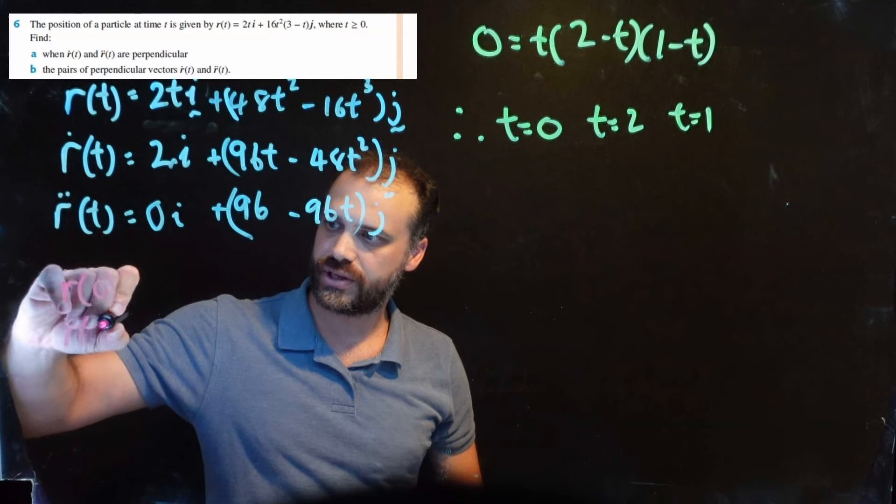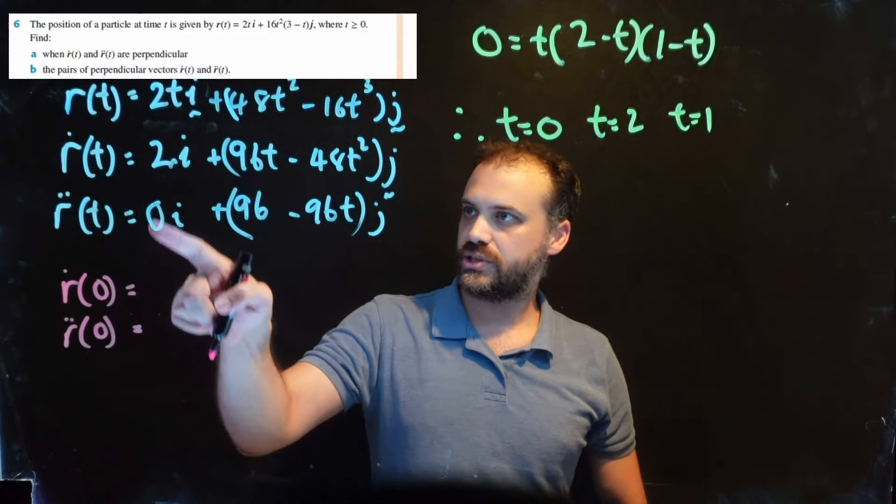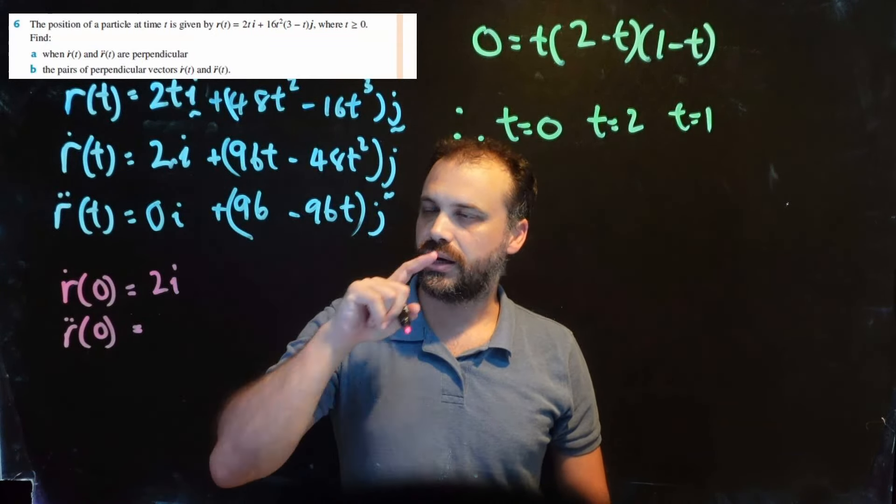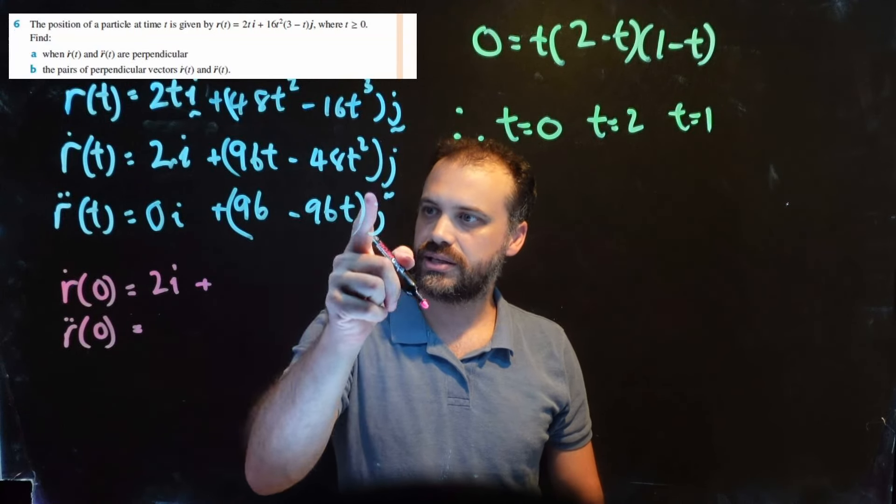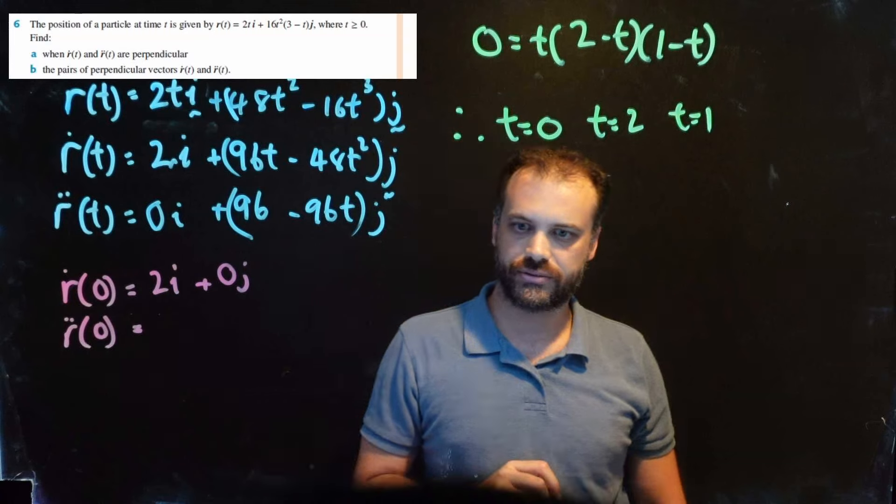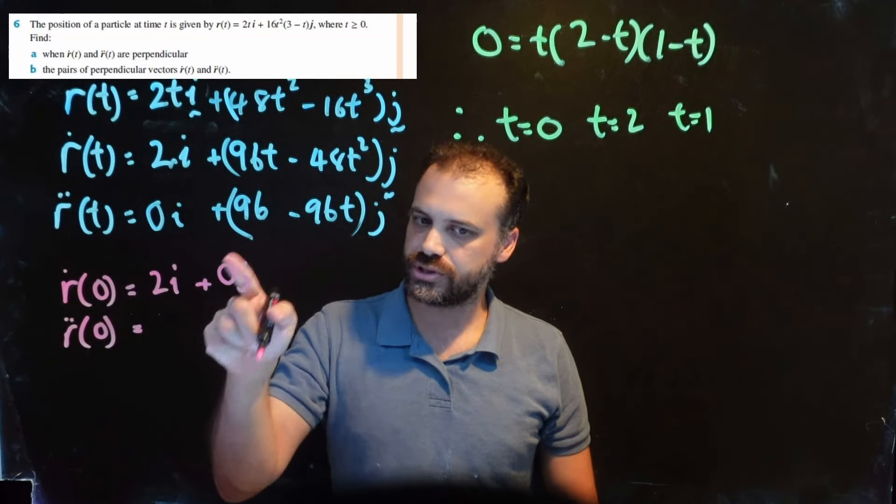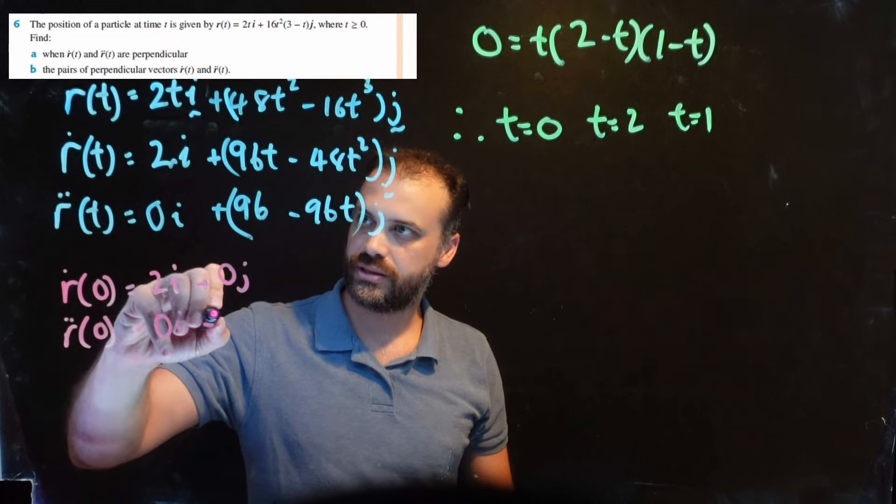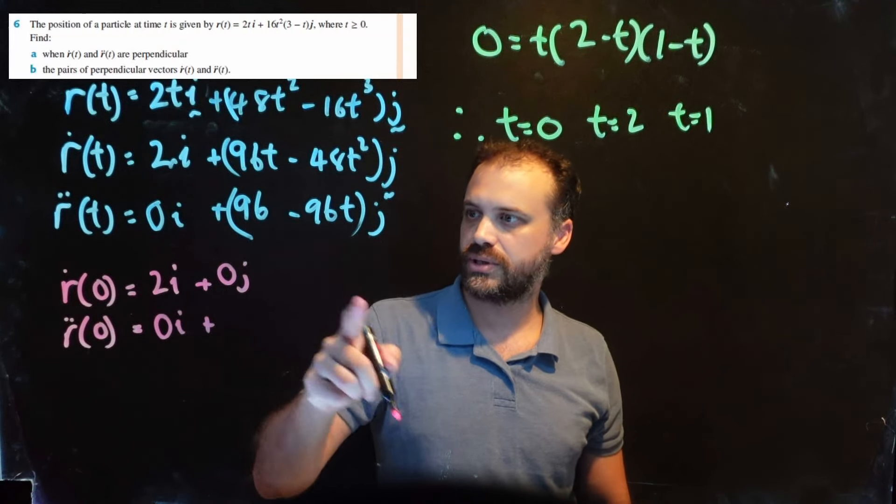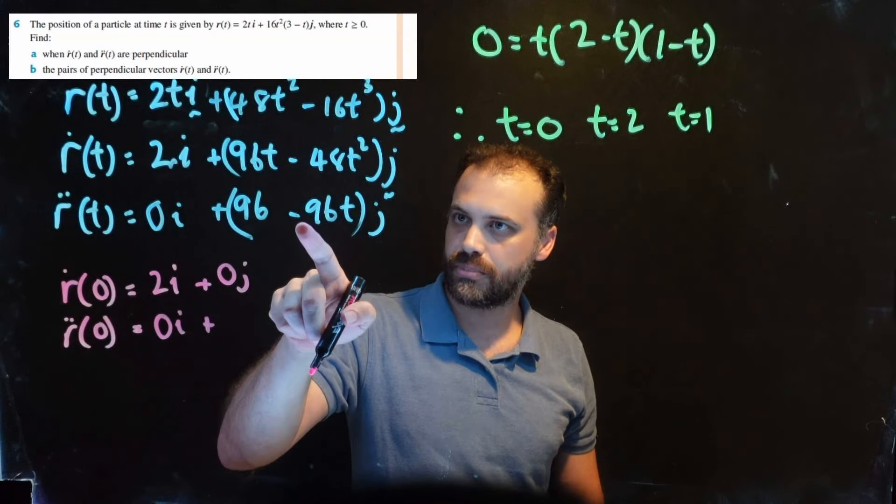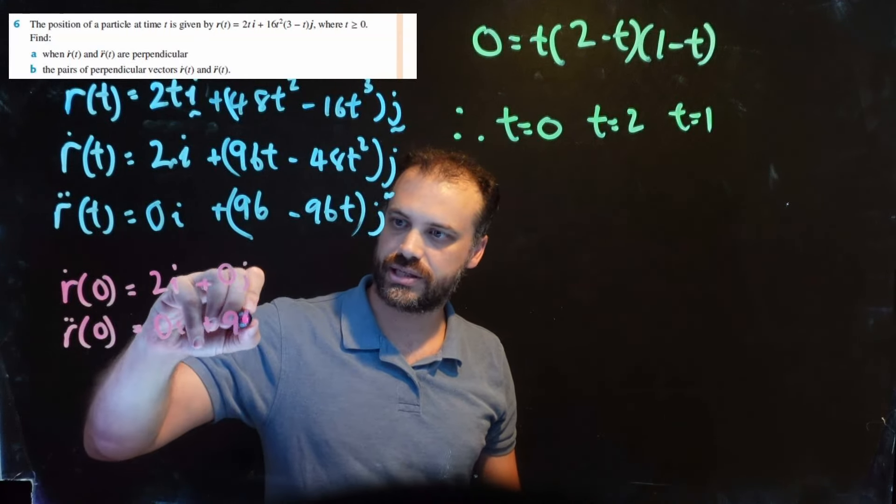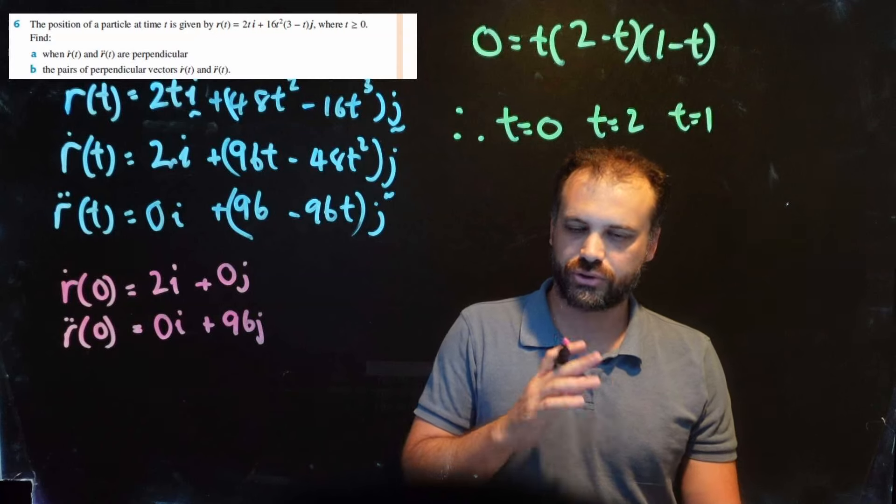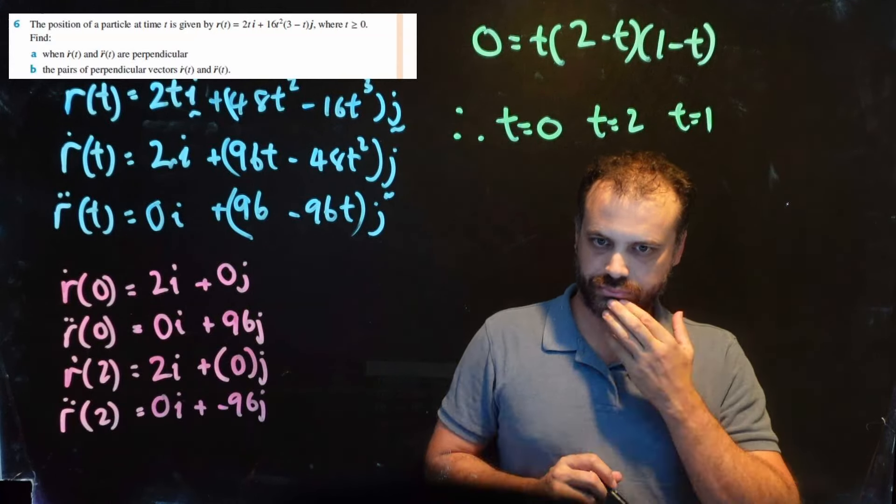Well, the velocity and acceleration at time 0 is easy - we're just subbing 0 into both of these. If I sub 0 into here, I still get 2i, and that will always be the case. Then if I sub 0 into here, I just get 0j. That is the velocity vector at time 0. The acceleration vector at time 0 is 0i plus, if I put 0 in here, I get 96 - 0, so I get 96j. That's how you do it for time 0. I'll do it for time 2 as well.